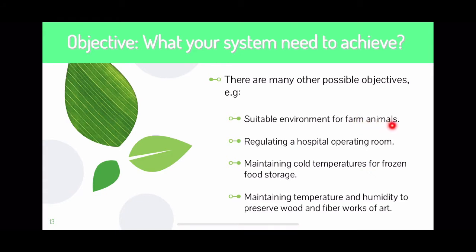Other possible objectives include conditioning for farm animals in very hot or cold climates, regulating hospital operating rooms, ICUs, and High Dependency Units. Also maintaining cold temperatures for frozen food storage, and maintaining temperature and humidity to preserve museums or any place where we want to preserve art. These are some of the objectives achievable using HVAC and R systems.